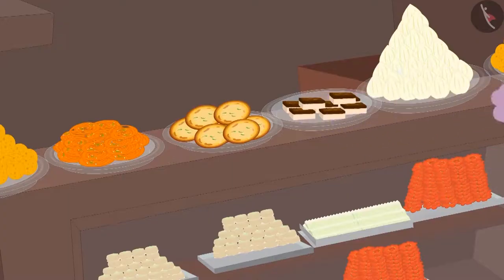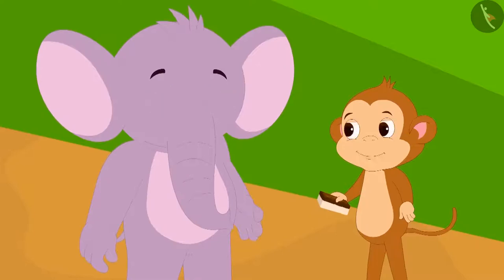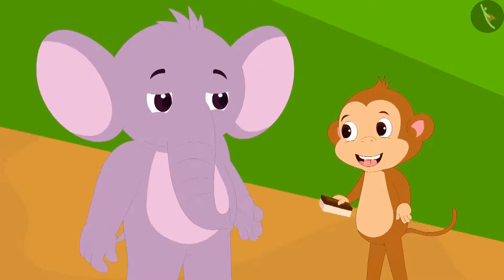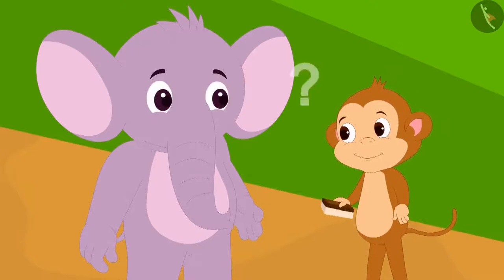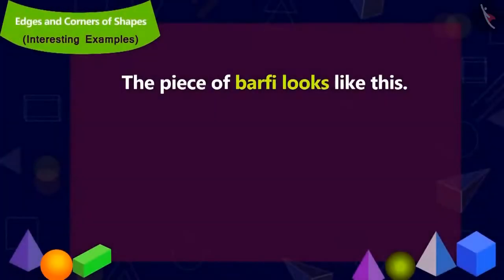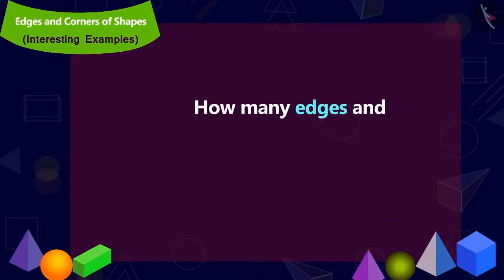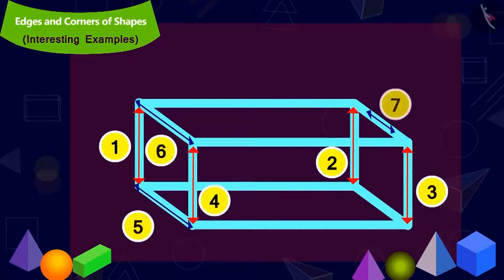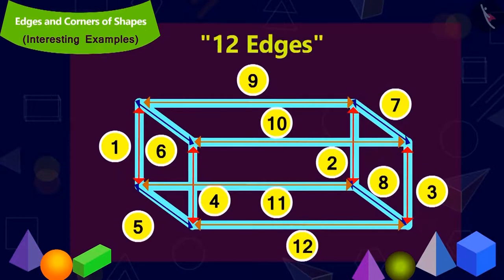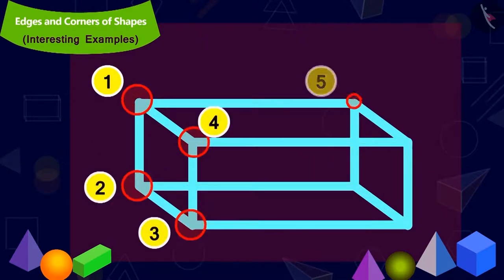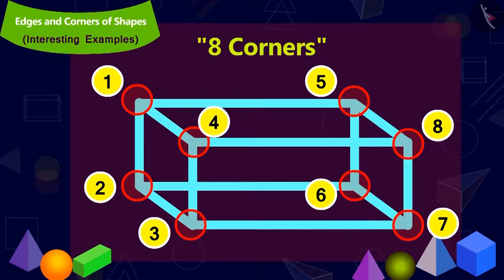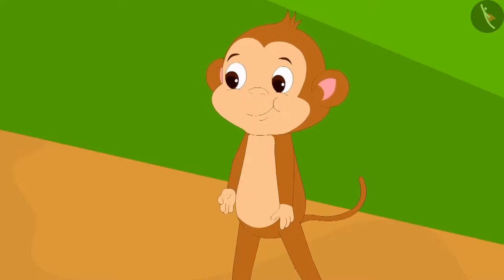Appu first gave Babban a piece of barfi. Babban immediately said: 12 corners and 8 edges. Is Babban's answer correct? This is how the piece of barfi looks — can you tell how many edges and corners it has? Here are the edges. How many edges are there in total? 12. And how many corners? 8. Babban's answer is absolutely correct. He quickly ate the barfi.